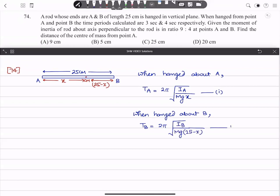In this question we have the ratio of TA and TB given, and we also have the ratio of IA and IB given. So if we divide equation 1 by equation 2, we get TA upon TB, which we square.